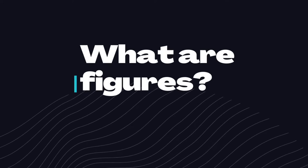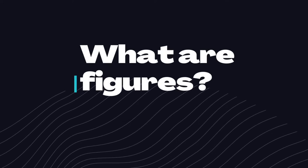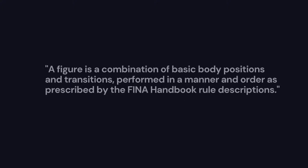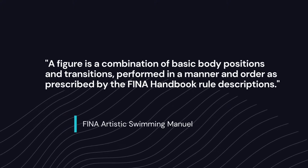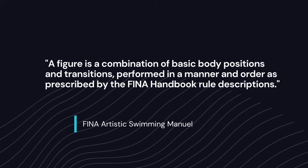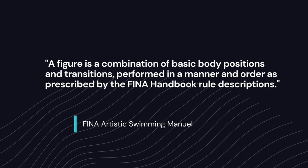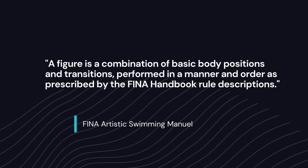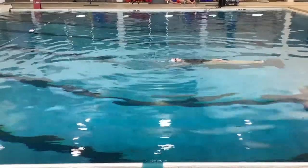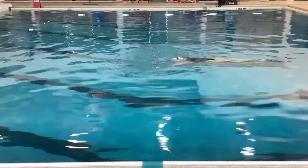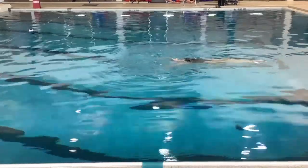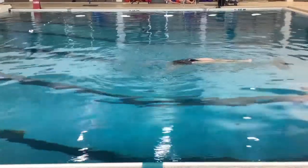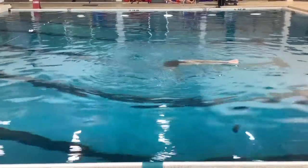A question I get a lot from people new to the synchro community is: what are figures? According to FINA, a figure is a combination of basic body positions and transitions performed in a manner and order as prescribed by the FINA handbook rule descriptions. I have an example here of a figure called Ariana. They've given us the description of this figure and shown us what positions we have to go through and how we have to move to each of those positions.